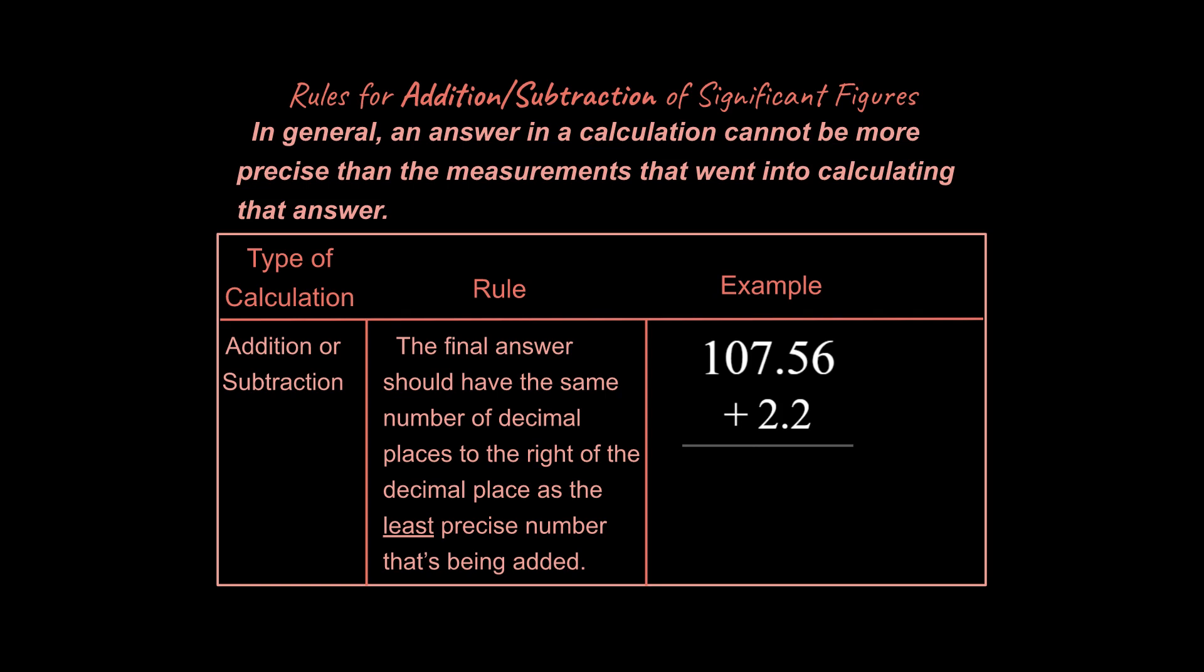That's the reason why we're going to be doing this. So the first rule is addition or subtraction. So the rule is the final answer should have the same number of decimal places to the right of the decimal place as the least precise number that's being added. So if you take a look at our example on the right over here, you can see that we've got two numbers. We're adding them together and I want you to focus on how many digits there are to the right of the decimal place. So the top number has two, it's down to the hundredths. The bottom number has one, it's down to the tenths.